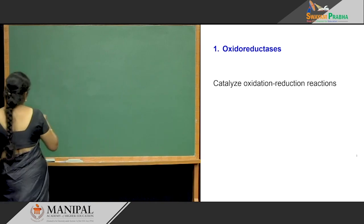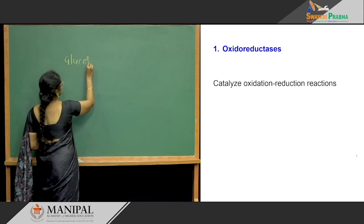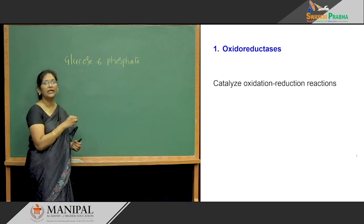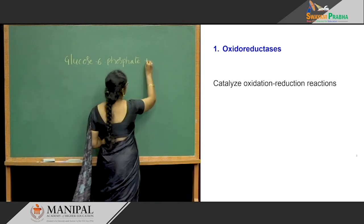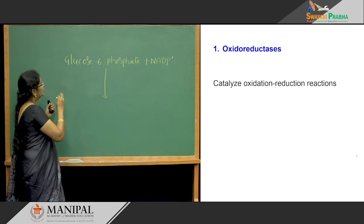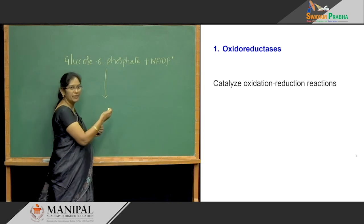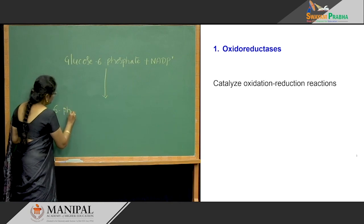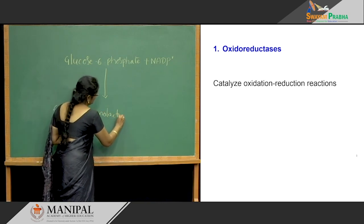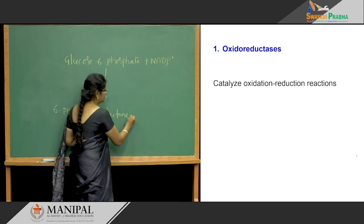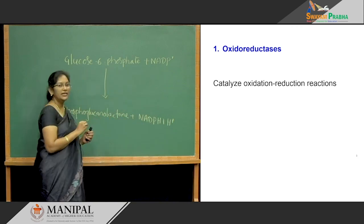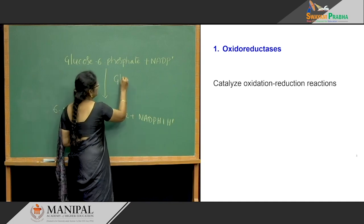One reaction we are going to see is glucose-6-phosphate. Here, glucose-6-phosphate is mainly donating electrons to NADP+. In this reaction, glucose-6-phosphate, by donating electrons to NADP+, is oxidized to 6-phosphogluconolactone. And by accepting these electrons, NADP+ is reduced to NADPH + H+. This reaction is mainly catalyzed by the enzyme glucose-6-phosphate dehydrogenase.